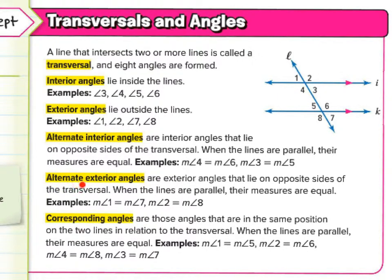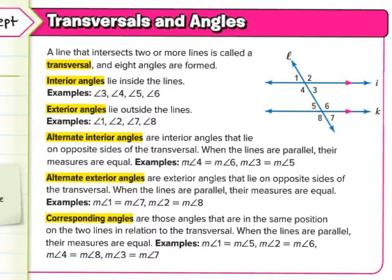Now we have alternate exterior angles. We discussed the interior angles between the lines; now we'll talk about the exterior angles outside the parallel lines. These are exterior angles that lie on opposite sides of the transversal. When the lines are parallel, their measures are equal — so measure of angle one equals measure of angle seven.